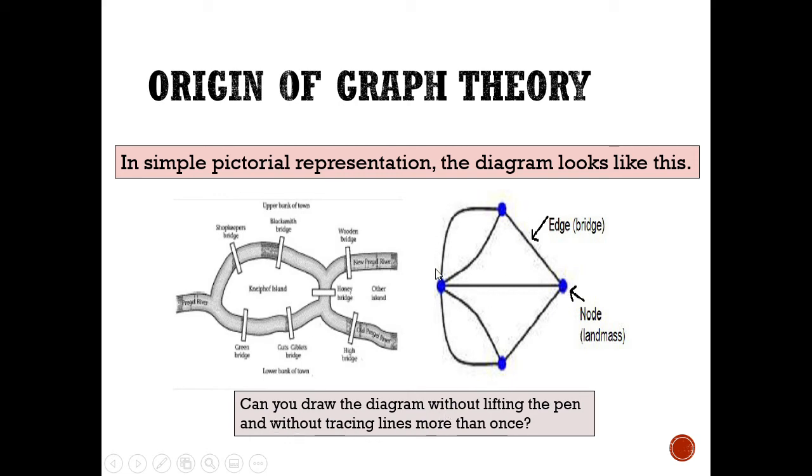So earlier, we end up with this diagram, and the problem was to cross all the bridges exactly once, and end up where we started. So we can translate the problem in terms of this. Can you draw the diagram without lifting the pen, and without tracing lines more than once? So we can trace this line, and then trace this line, and then trace this line, and then trace this line segment, and then, oops, I lifted the pen. Let's start over.